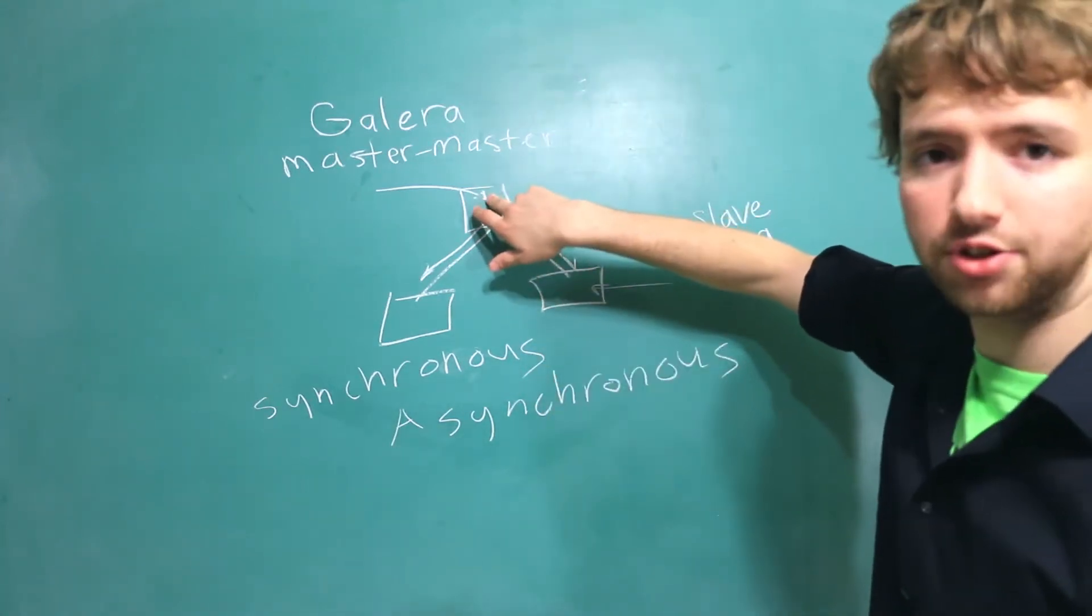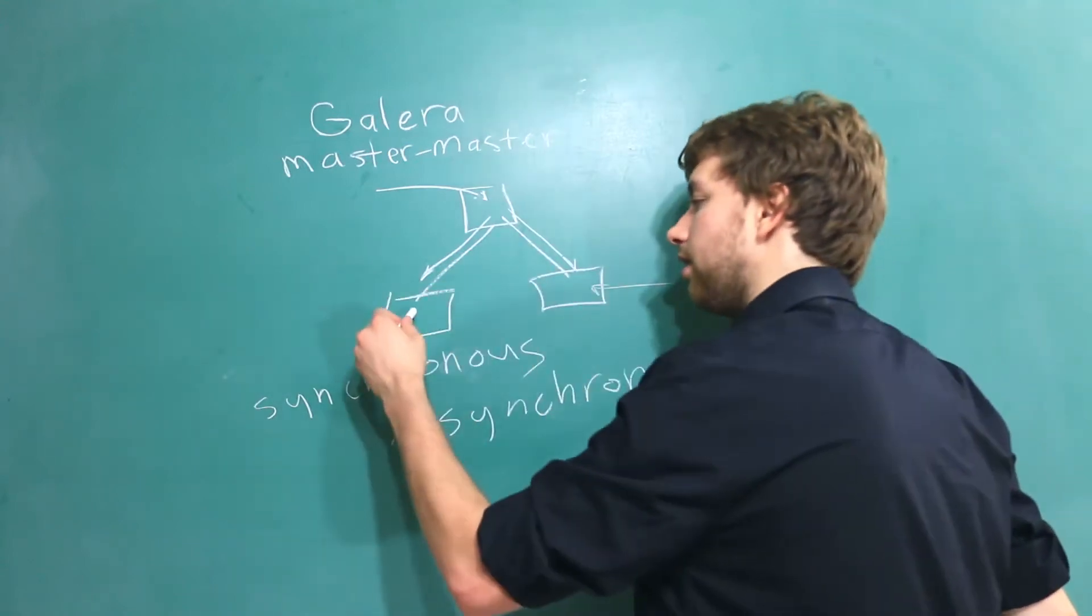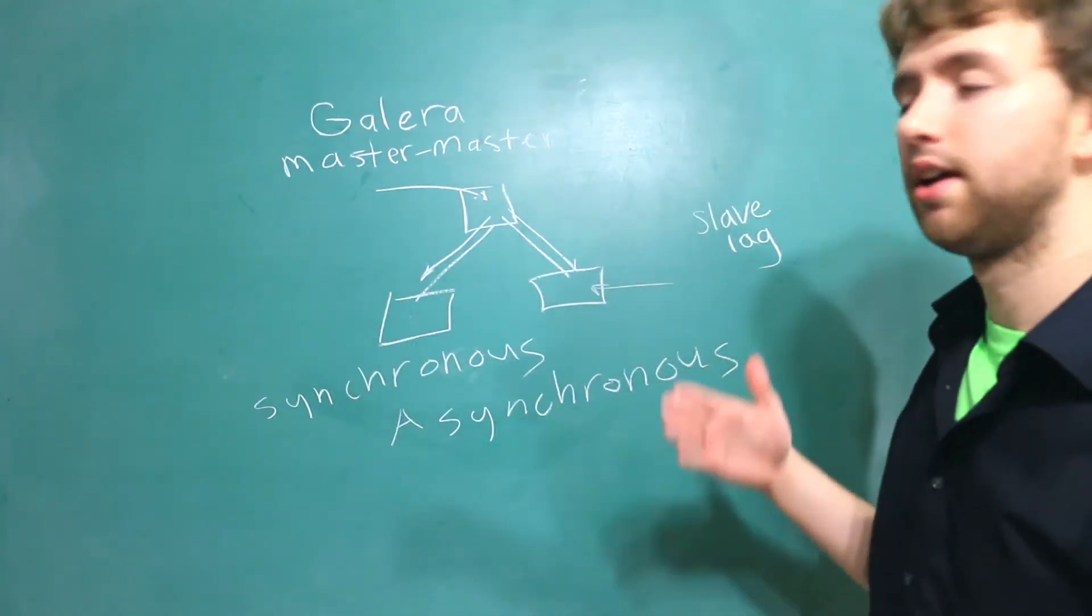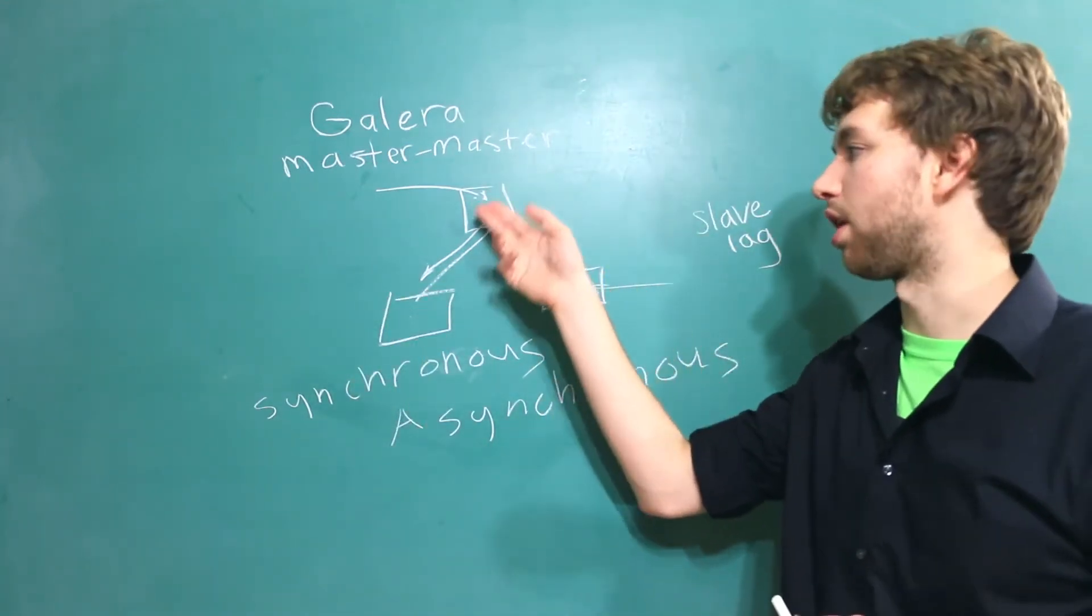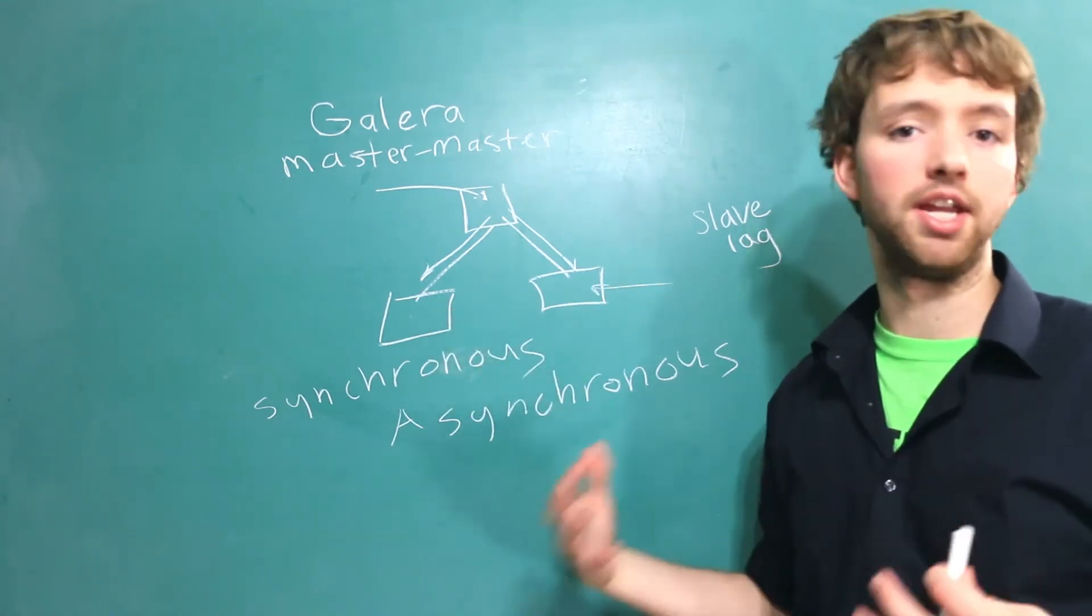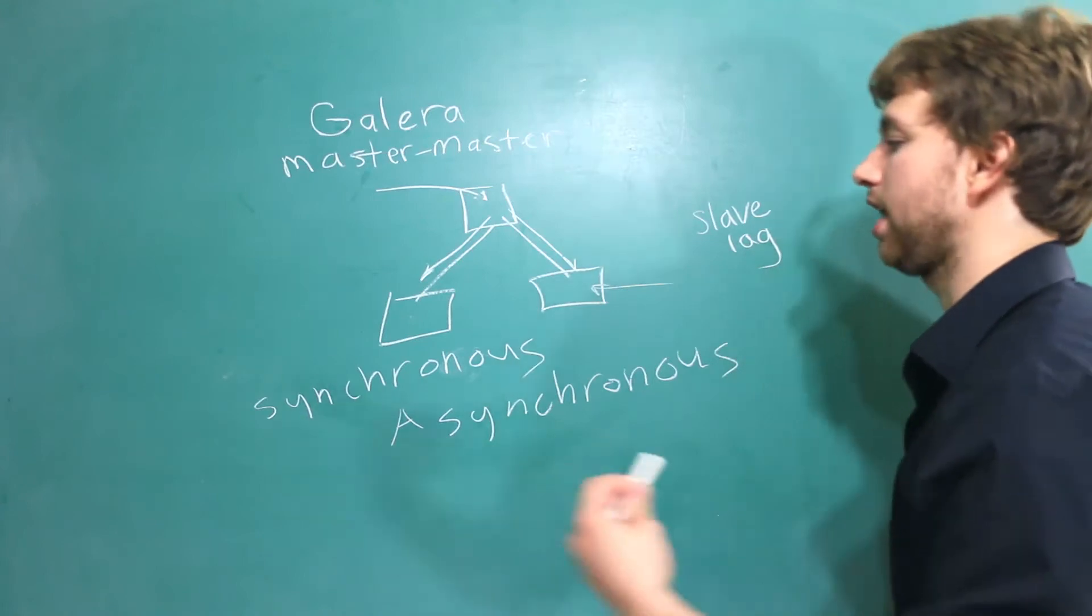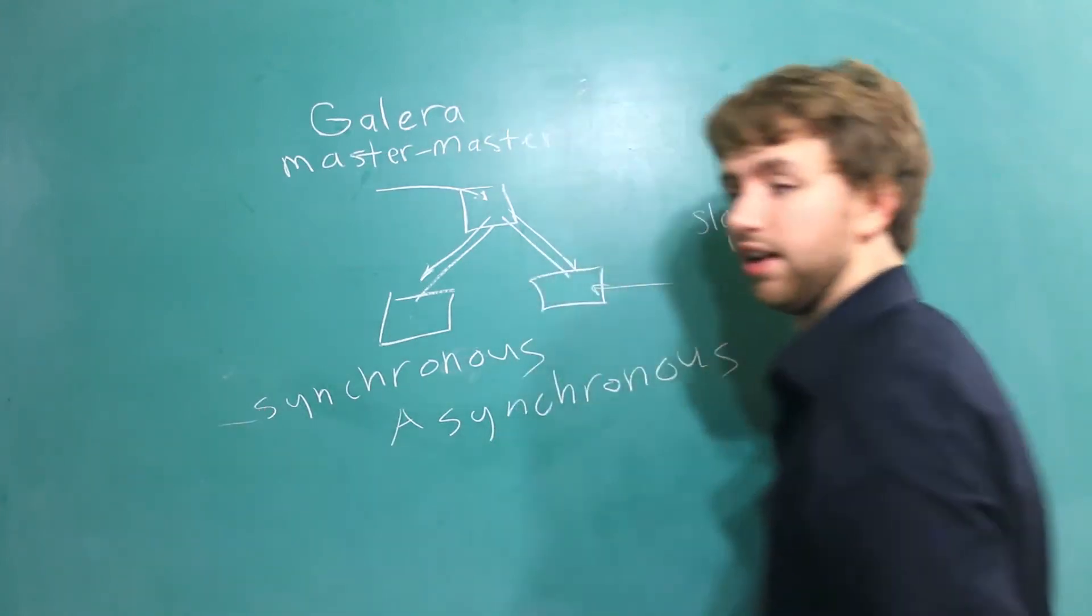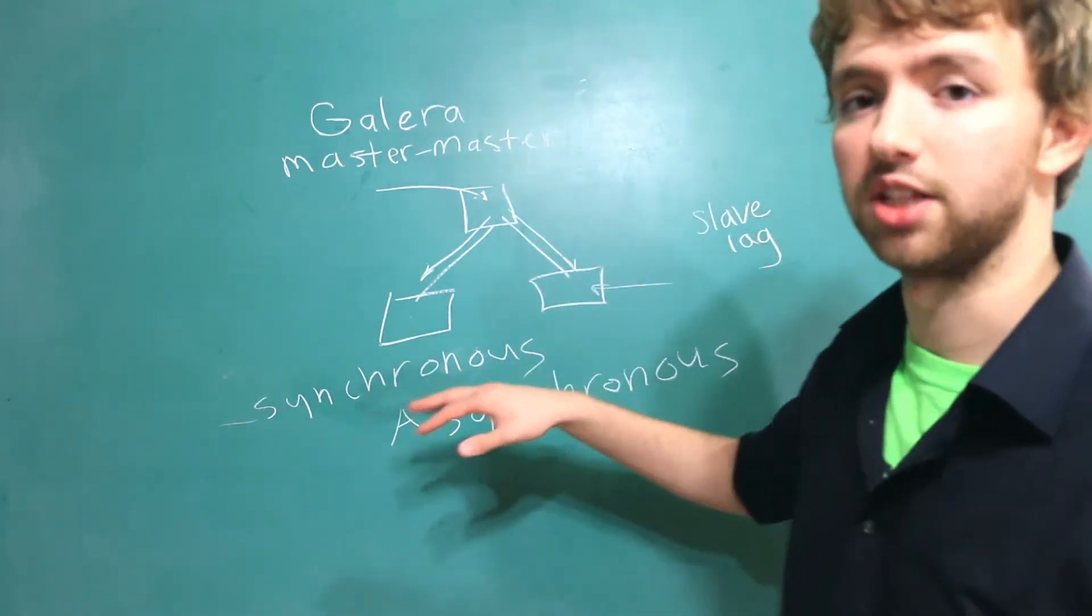So for example if you write to this master and then immediately read from the slave that data might not actually have propagated yet down to the slave and you might be getting not up-to-date data. So that's why I like synchronous and what that means is the data is transferred immediately.